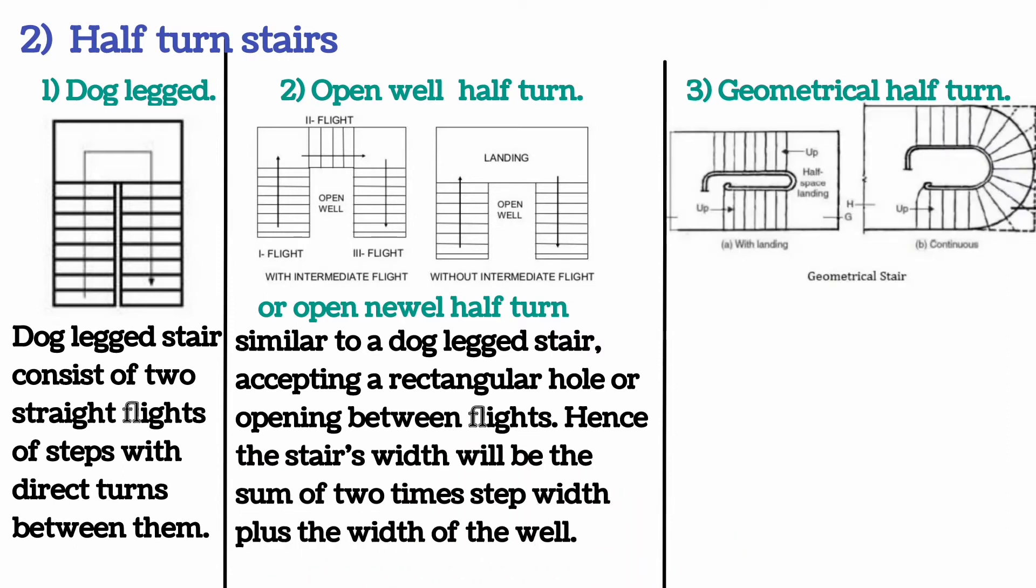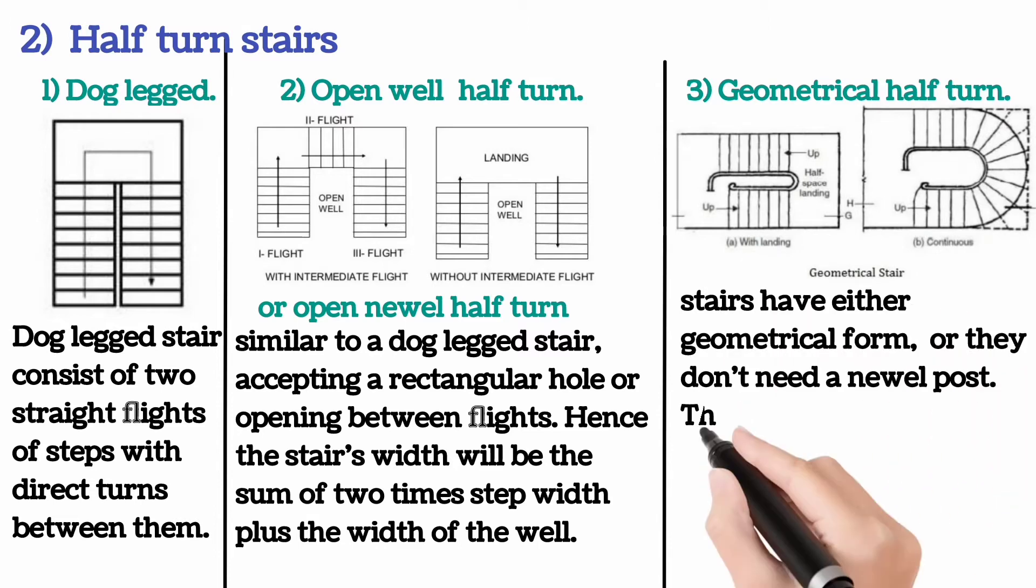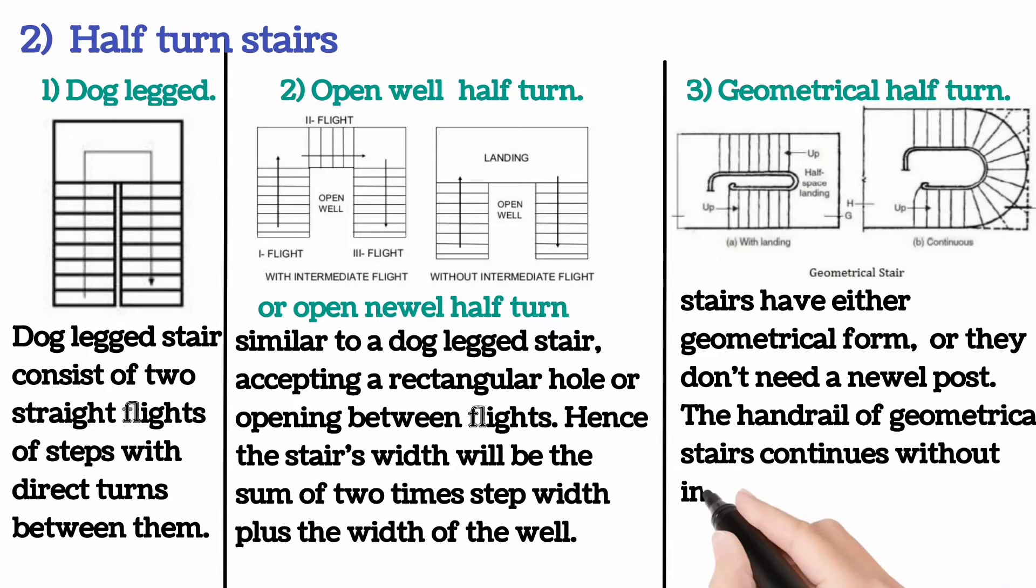Geometrical half turn stairs are of geometrical form, and they don't need a newel post. The handrail of geometrical stairs continues without interruption in any angular turn.